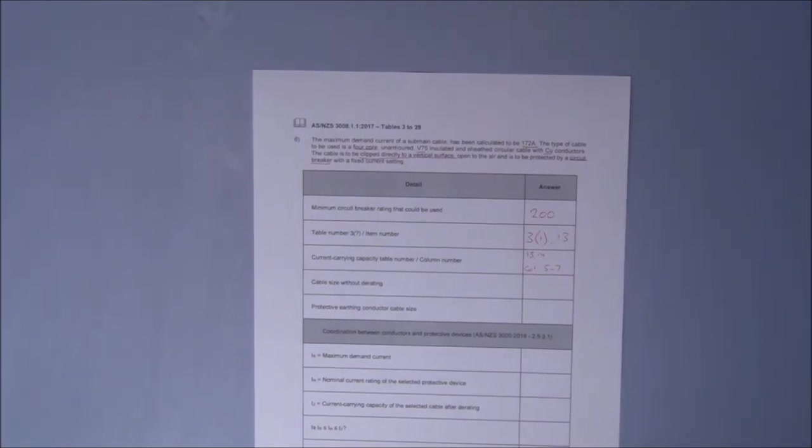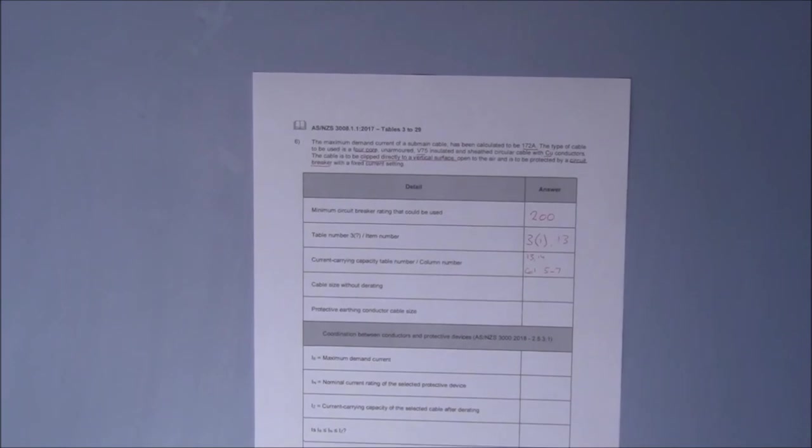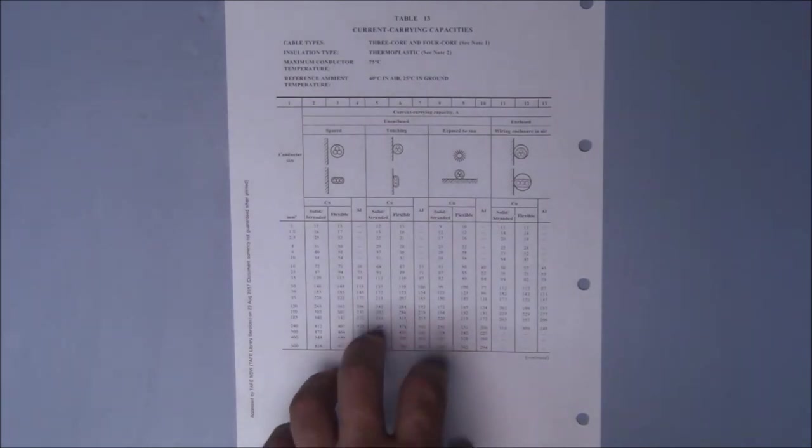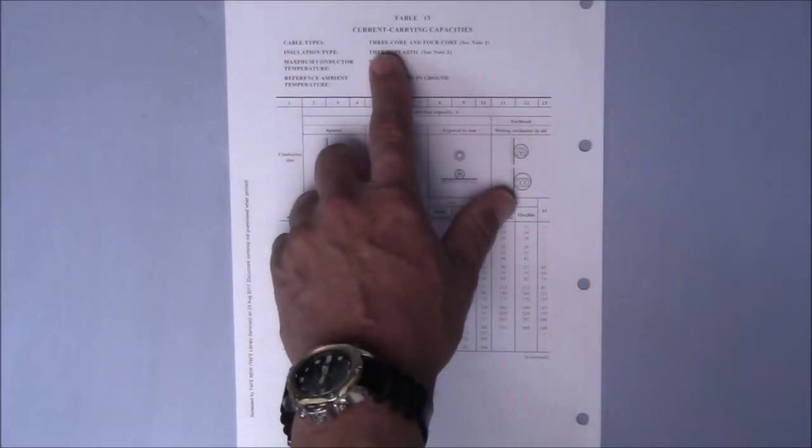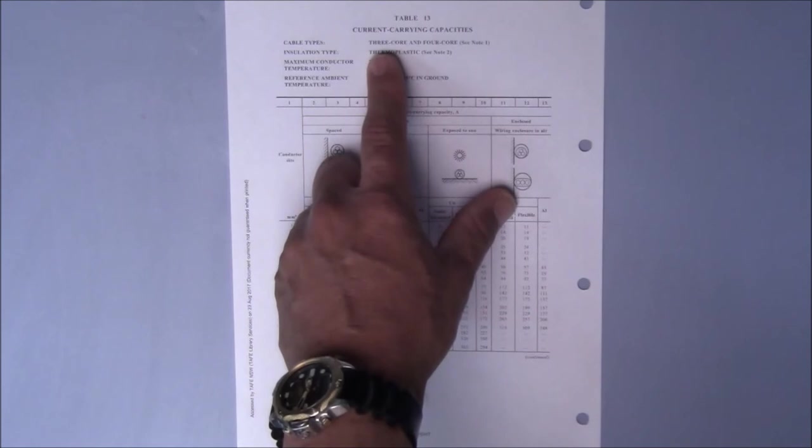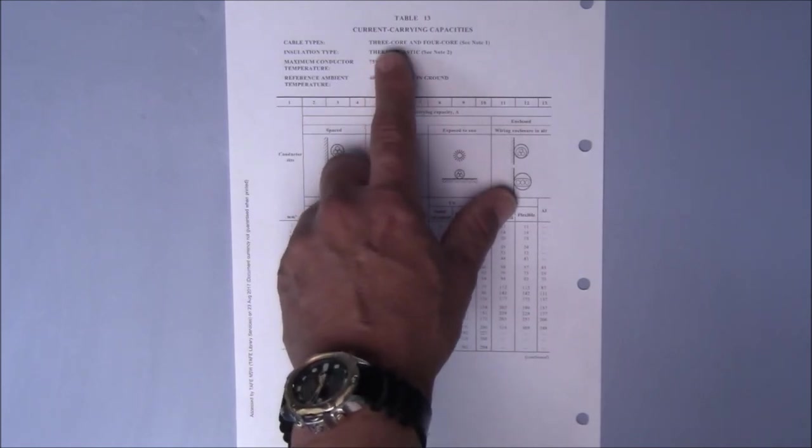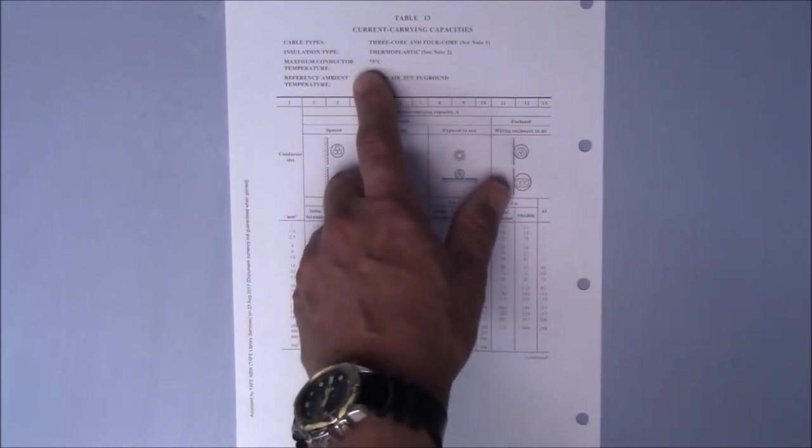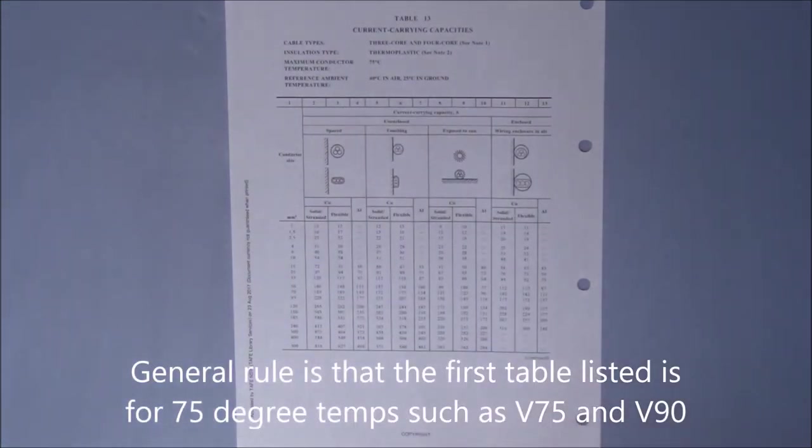Let's have a look at table 13. I've opened my book up to table 13. I'm just going to read the cable types and confirm that I've got the right one. This talks about a three-core and a four-core. Insulation type is thermoplastic. Maximum cable temperature is 75.